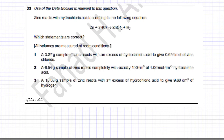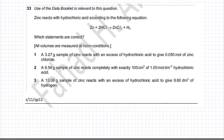Starting with option number one: 3.27 grams of zinc reacts with an excess of hydrochloric acid, which means that all of this zinc — 3.27 grams — reacts. And it's going to produce 0.05 moles of zinc chloride. We need to test whether this option is correct or not.